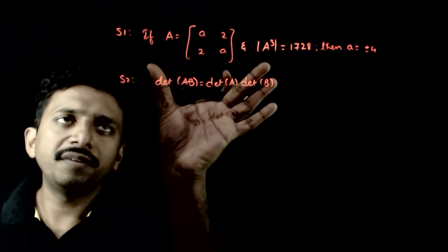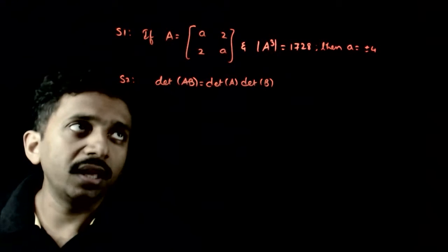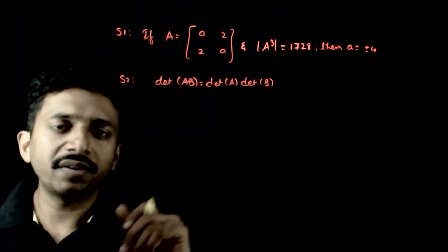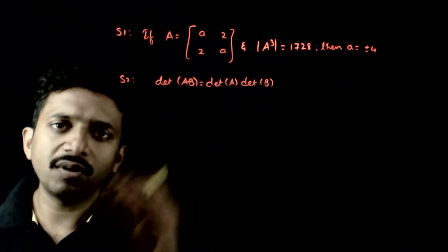Welcome students. In this question, you have given two statements. Statement 1: If matrix A satisfies det(A) = A² - 4 and det(A³) = 1728, then A = ±4. Statement 2: det(AB) = det(A) × det(B).